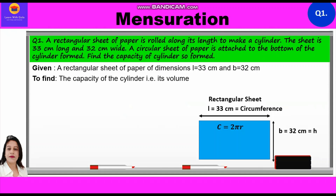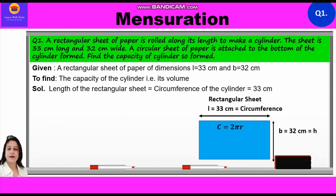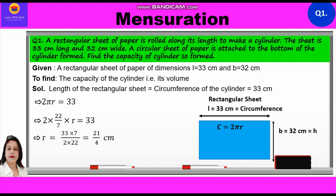Let's start with the solution. The length of the rectangular sheet is equal to the circumference of the cylinder, which is equal to 33 cm. Therefore, 2 pi r equals 33. So 2 into 22 by 7 into r equals 33. Cross multiplying, r is equal to 33 into 7 upon 2 into 22, which equals 21 by 4 cm. Therefore, radius is equal to 21 by 4 cm.